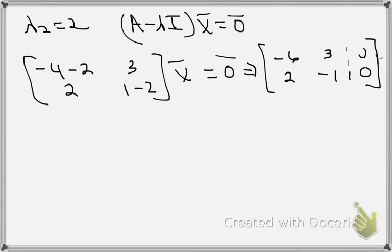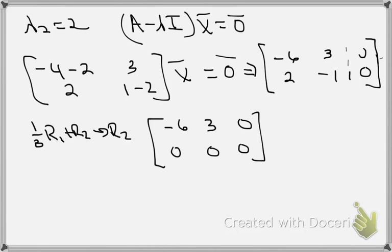I could for example say I'm going to take 1/3 row 1, add that to row 2, make that the new row 2. If I do that for this augmented system, then I'm going to have [-6, 3 | 0]. And then of course I have [0, 0 | 0] for the second row because of the linear dependence of the two rows.